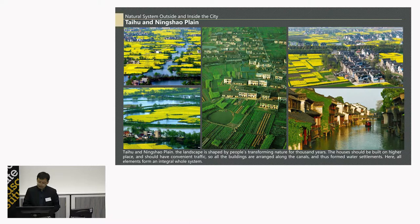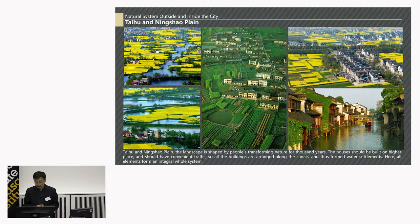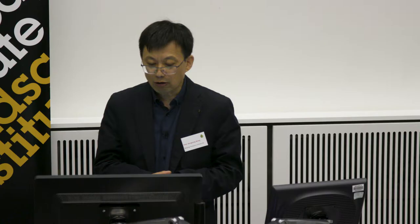These are photos from the 1980s of the Taihu Lake Basin and Ningxiao Plains. The landscape is shaped by people transforming nature for thousands of years. The houses are built on higher places and should have convenient traffic, so all the buildings are arranged along the canal, forming the water towns. Here all the elements — ponds, polders, villages, and rivers — form a whole system.